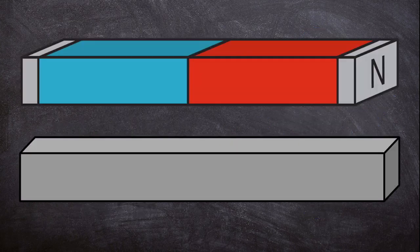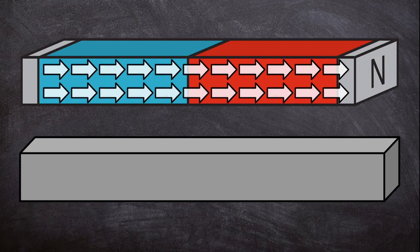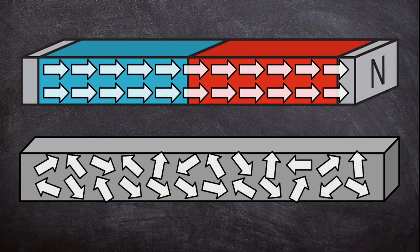If you could see the atoms in a magnet, you would notice that they're all neatly aligned and facing the same direction, like in the top diagram. If something is not magnetic, the atoms are all jumbled every which way.